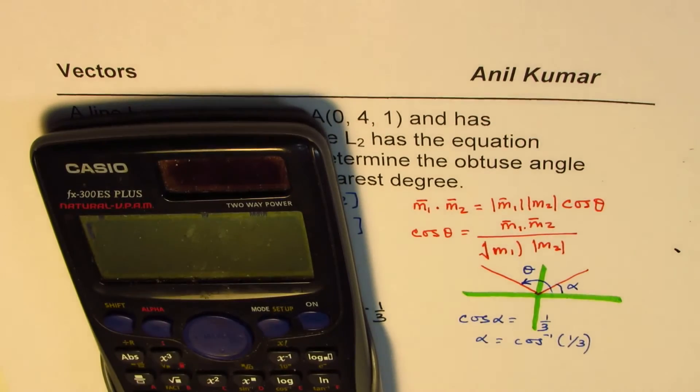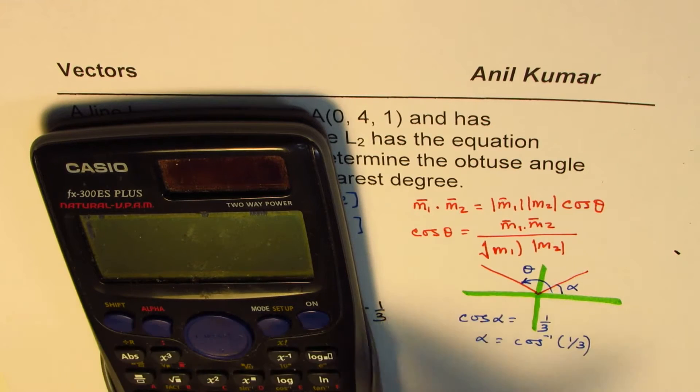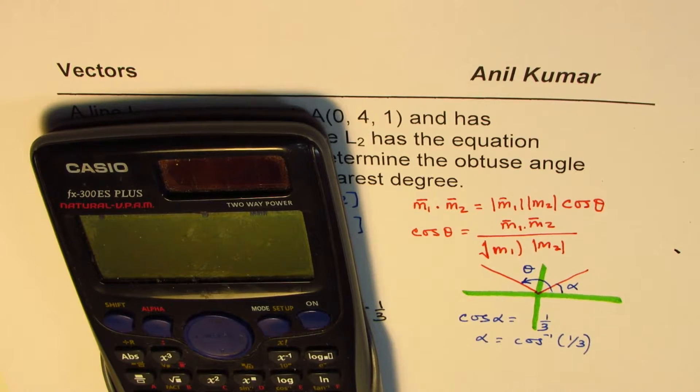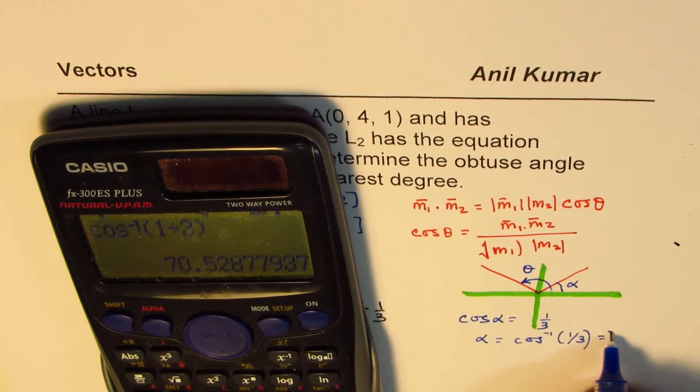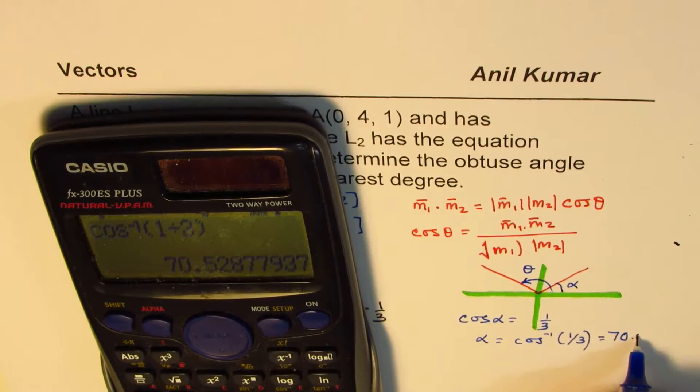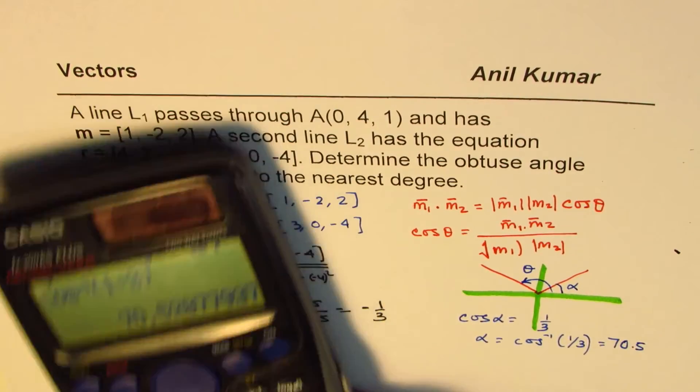So we will say cos of alpha equals to 1 over 3. Alpha is equals to cos inverse of 1 over 3. So that is a better approach actually. So let's find the acute angle first. So we will do shift cos inverse of 1 divided by 3, which is equal to 70.5.